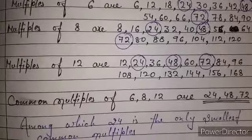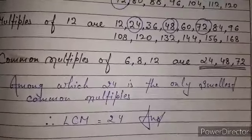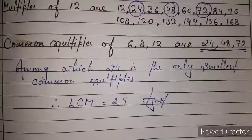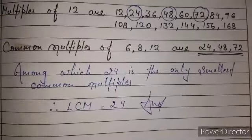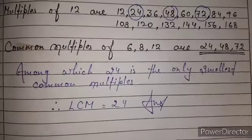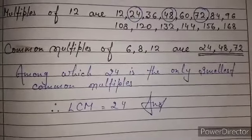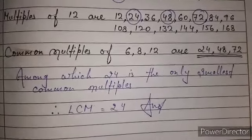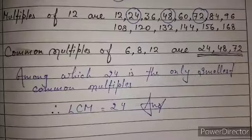Hence, common multiples of 6, 8 and 12 are 24, 48, 72. Among which 24 is the smallest common multiple, so we say that LCM is 24. LCM means lowest common multiple. There are 3 steps of finding LCM. In the first step, we write the multiples of the given numbers. In the second step, we find which are the common multiples of these numbers. And in the third step, we find which is the least common multiple, that means which is the smallest common multiple — that will be the LCM.